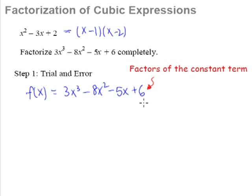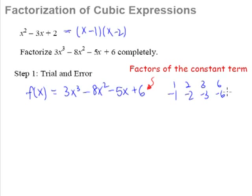We always try or guess factors of the constant term. The factors of 6 are 1, 2, 3, and 6, and of course their negative counterparts: negative 1, negative 2, negative 3, and negative 6. So the worst-case scenario is you have to try 7 times before you get the right one, before you can get one factor. So let's get started. The first thing we do, we try x equal to 1.